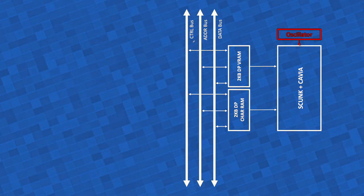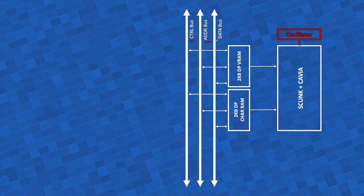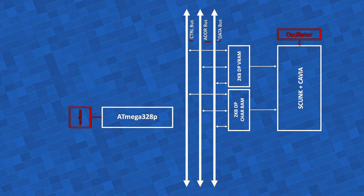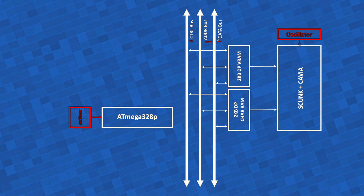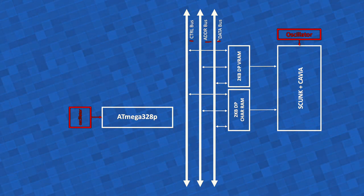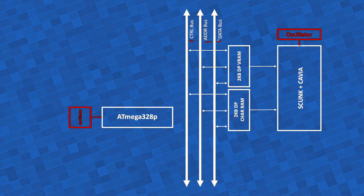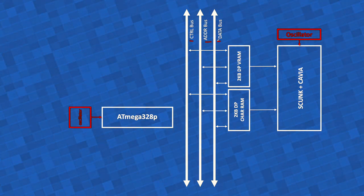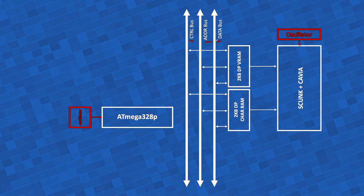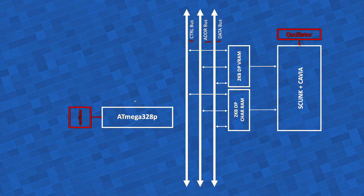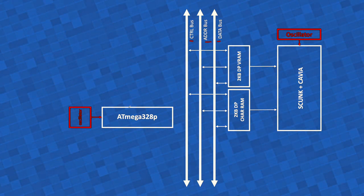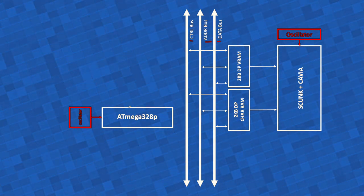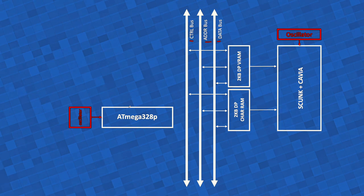We are going to connect other system components to the control, address and data buses. The first thing we will do is, instead of using older chips like the 6522 to do serial I/O, we are going to go for a modern alternative — an ATmega 328P, which is the microcontroller used in the Arduino Uno boards.